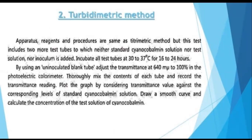The second method uses the same apparatus and procedure, but includes two additional test tubes which contain neither standard solution nor test sample — these serve as uninoculated controls. Inoculate the remaining test tubes with bacteria sample and incubate at 30 to 37 degrees Celsius for 16 to 24 hours.